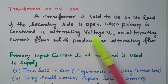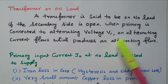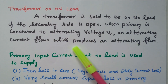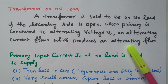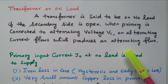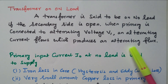When the primary is connected to the alternating voltage, an alternating current flows which produces alternating flux. The secondary winding is kept open while the primary winding is connected to the alternating voltage, so that alternating current flows; due to the rate of change of this alternating current, alternating flux is produced.